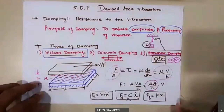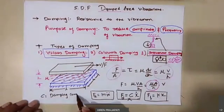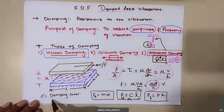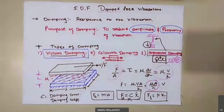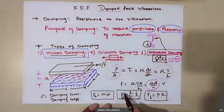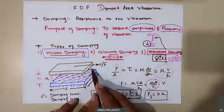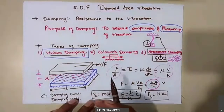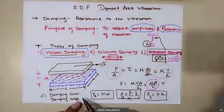In this equation, C is called the damping constant or damping coefficient. These are the two names given to this proportionality constant. If you keep on increasing the value of C for the same velocity, since C is in direct proportion with Fd, increasing C increases the damping force. If damping force increases, in every cycle there is more reduction in amplitude because more resistive force is being offered.